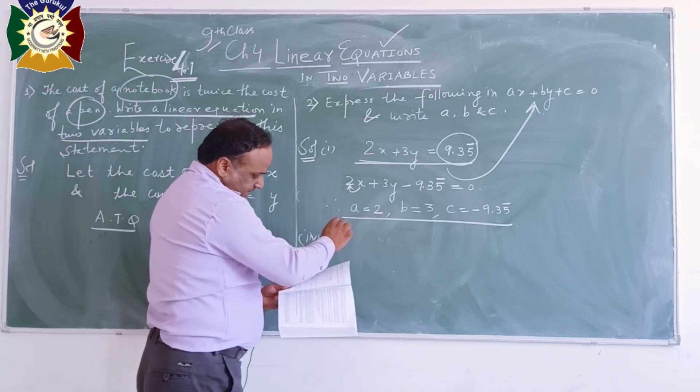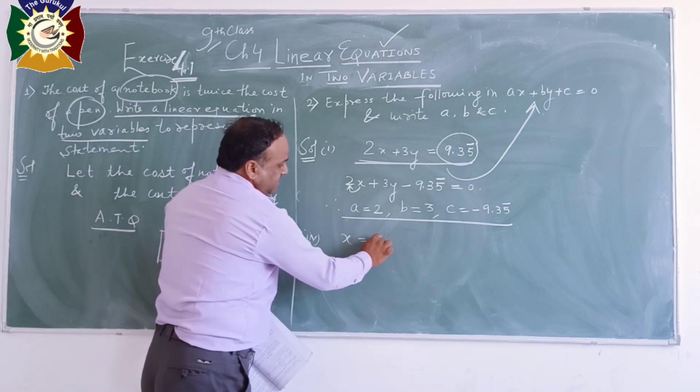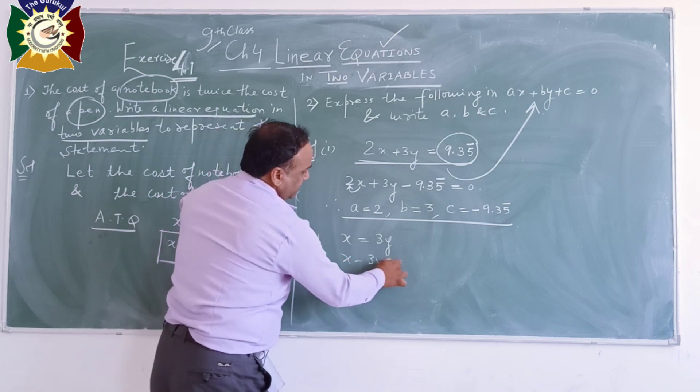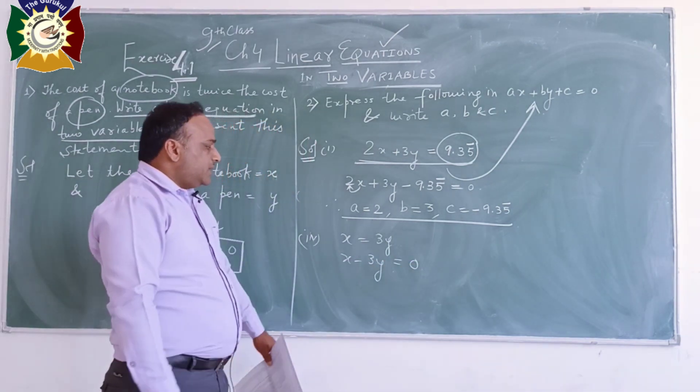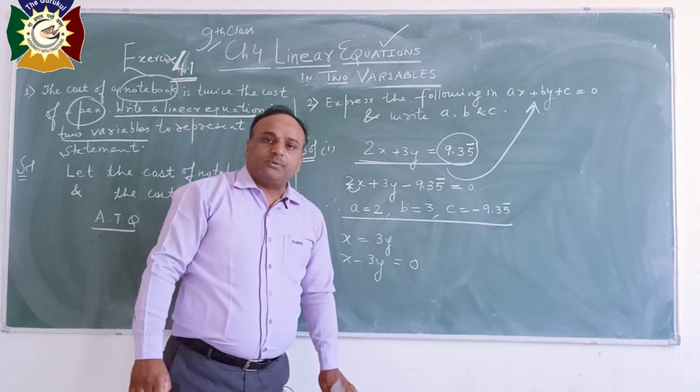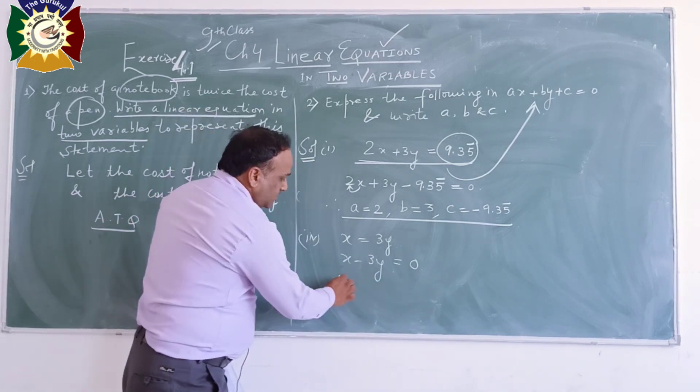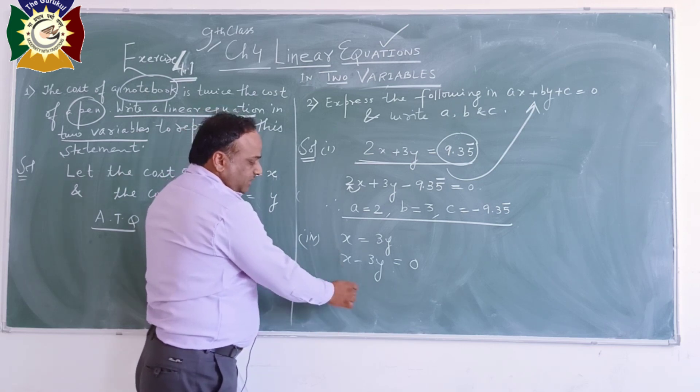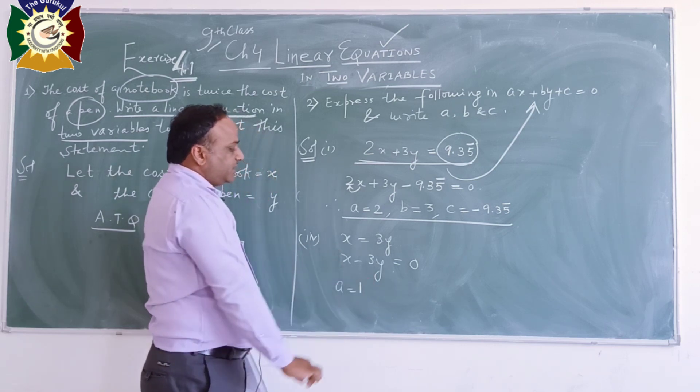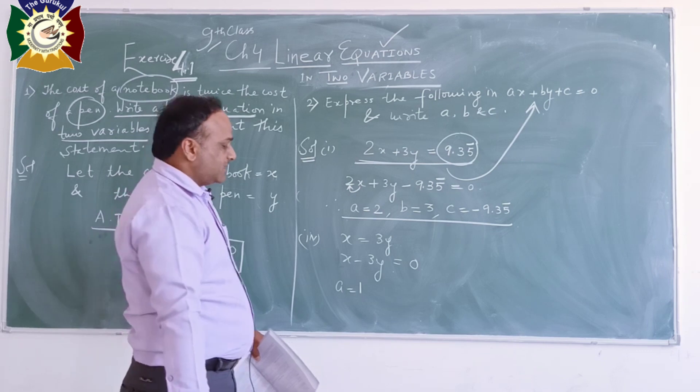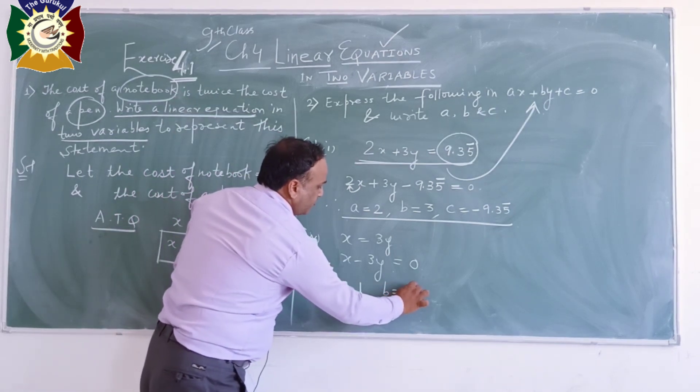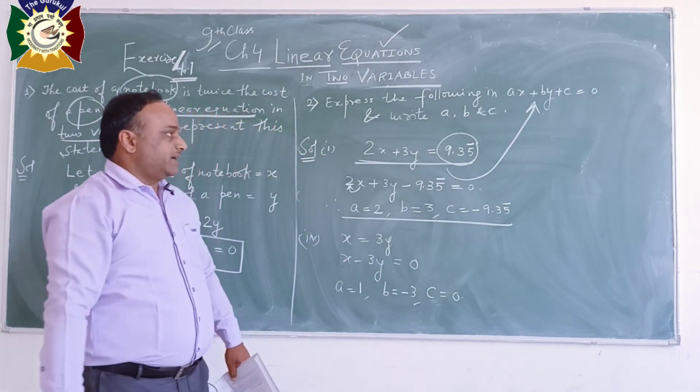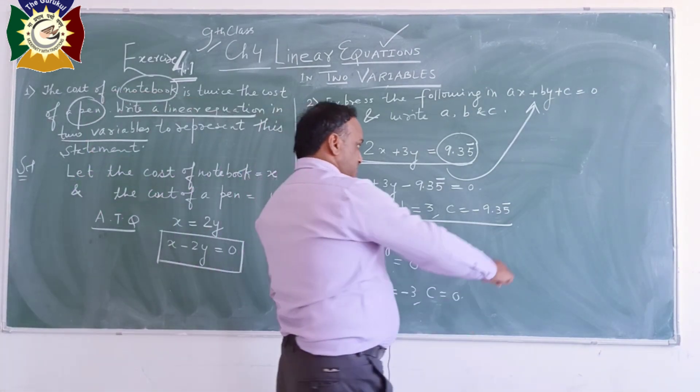Now we will move to the fourth part. Transfer this so there is only 0 on the right side. Now here only x and y are there, no constant term is there. So a, coefficient of x, is nothing so we'll write 1 here. Nothing here means that it is 1. So B, coefficient of y, is minus 3, and C is not here. Therefore we will write C is equal to 0.